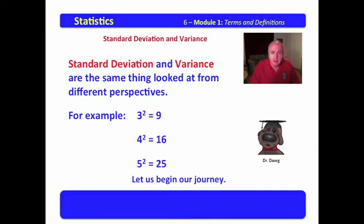Standard deviation and variance, again, are the same things. Standard deviation is the average distance of the data from the mean, and variance is the square of the standard deviation.